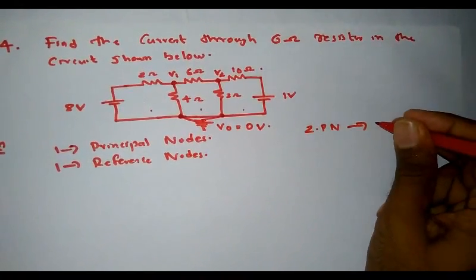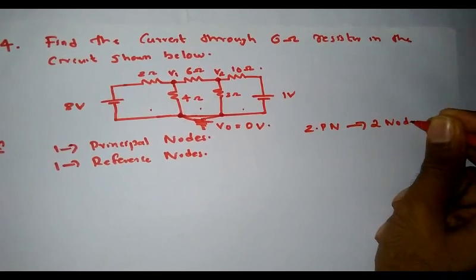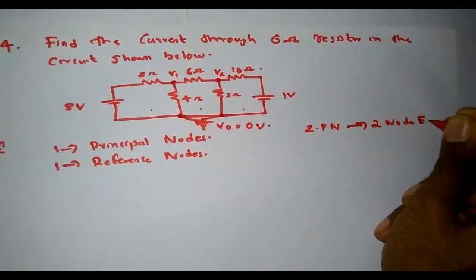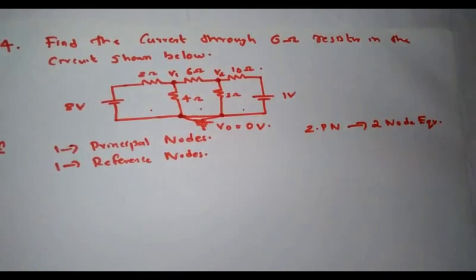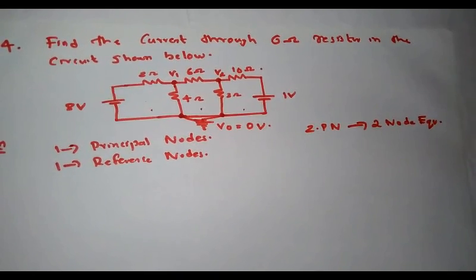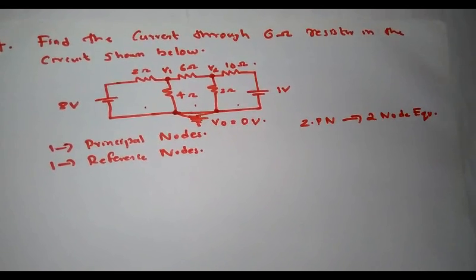Since we have only two principal nodes, we will get only two node equations. Compared to mesh analysis where we get three equations, by using nodal analysis we get only two equations. Therefore, it is simpler to solve two equations as compared to mesh analysis.